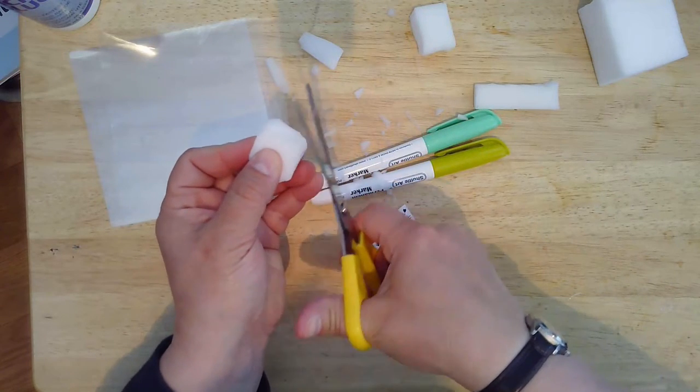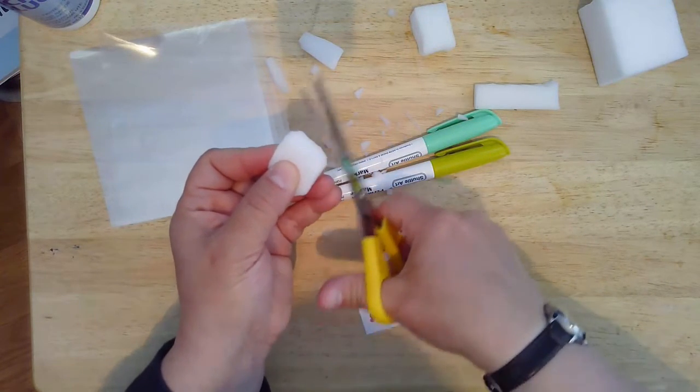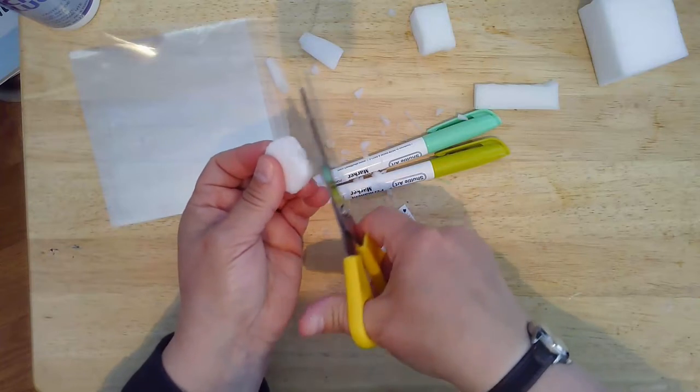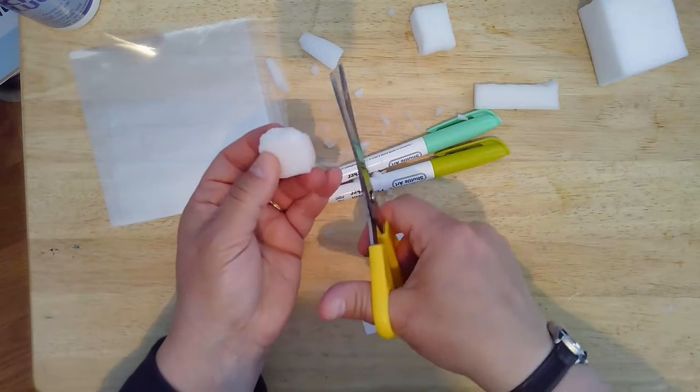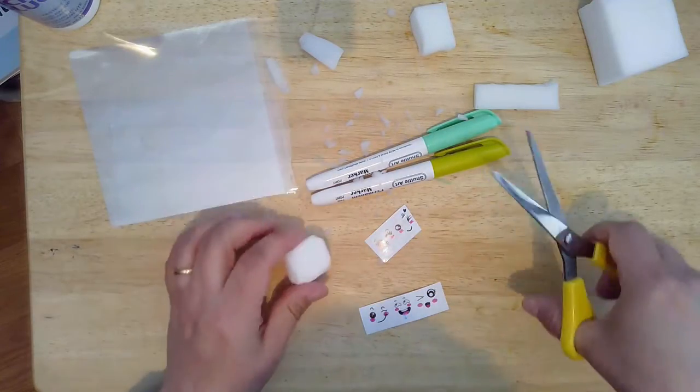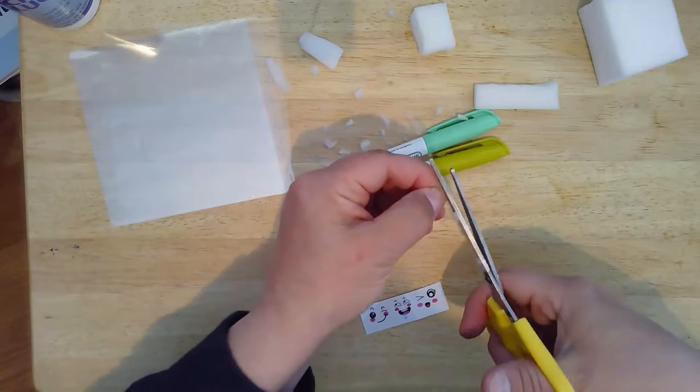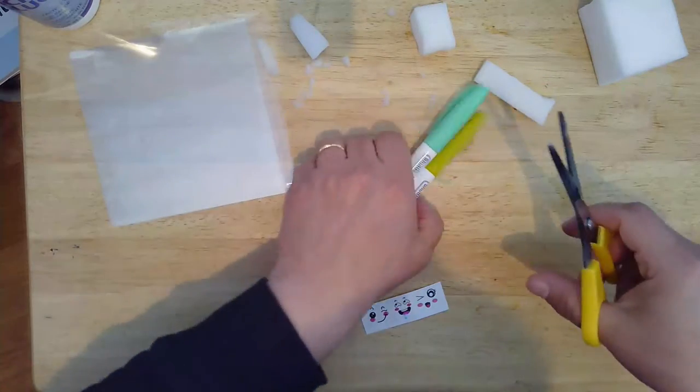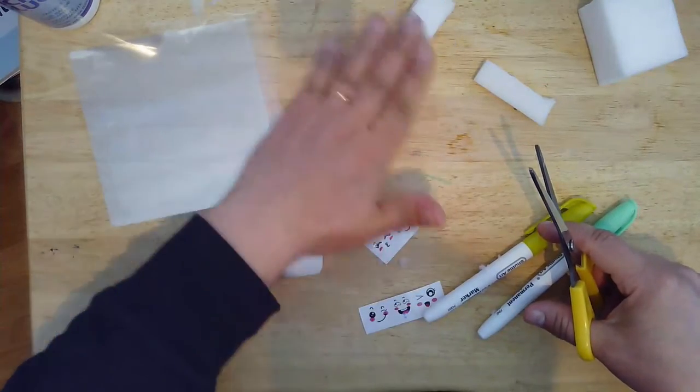Once I've got my sides the way I like them, double check each side. Looks good. Clean my scissors because I've got bits of foam sticking to it. Clear the area a bit.